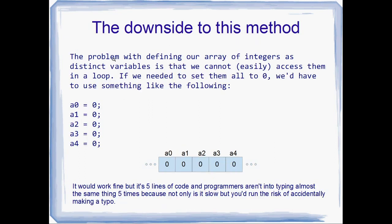If we wanted to set them all to zero, we've actually got to do it with five lines, one after the other. Without using pointers and underhand tricks, you have to set them one at a time: A0 equals 0, A1 equals 0, A2 equals 0, A3 equals 0, A4 equals 0 — that's five lines of code and it's really boring to type. In typing those five lines, you run the risk of a typo — maybe accidentally putting A0 equals 0 twice and forgetting A1 equals 0 — so it's no good.